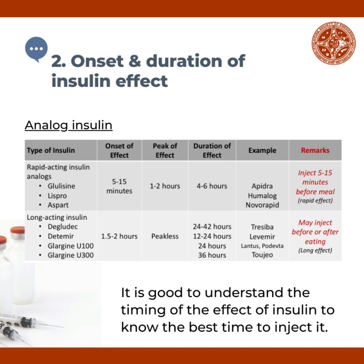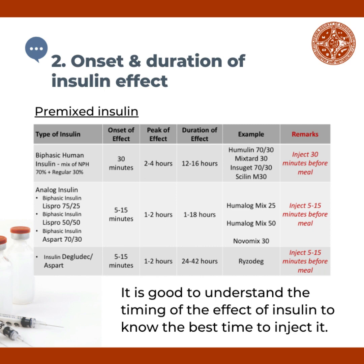These are the pre-mixed insulins: biphasic human insulin, biphasic insulin analogs, and insulin degludec with aspart. The biphasic human insulins contain a mixture of 70% isophane insulin and 30% regular insulin. The onset of action is at 30 minutes, peak effect at 2 to 4 hours, and duration of effect at 12 to 16 hours. Examples are Humulin 70/30, Mixtard 30, Insulin 70/30, and Scilin M30. These are injected 30 minutes before meals.